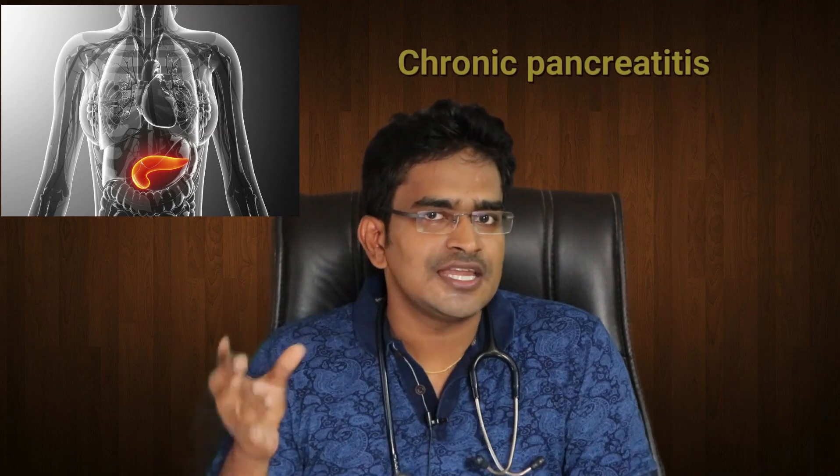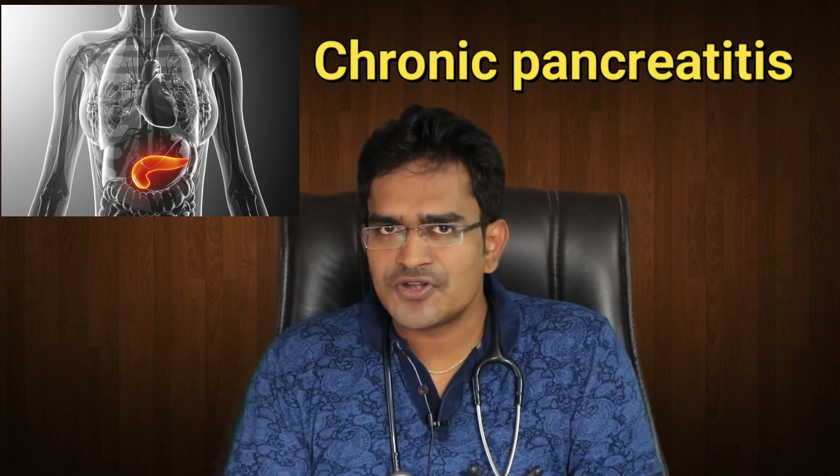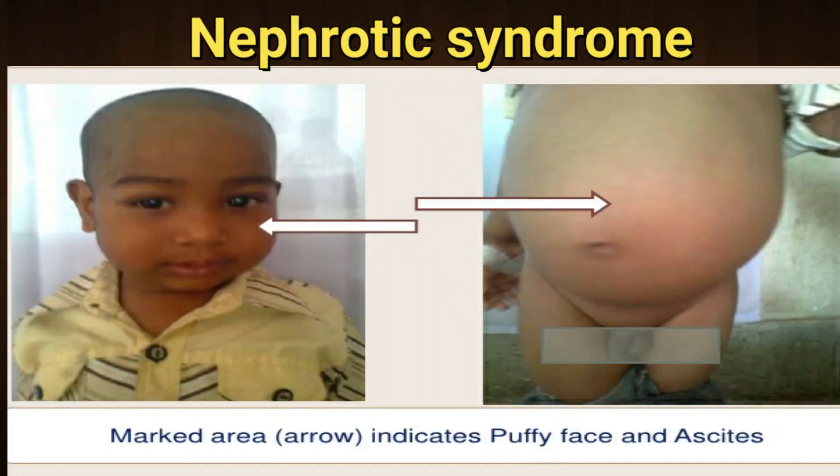Chronic pancreatitis is also a cause, similar to nephrotic syndrome. In nephrotic syndrome, protein leaks — this results in low protein. Hypothyroidism is also a rare disease cause. Basically, low protein and vitamin deficiency are contributing factors.